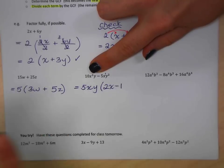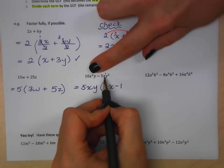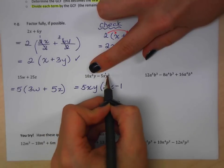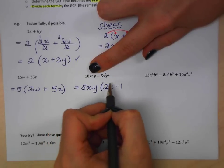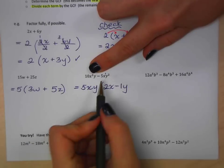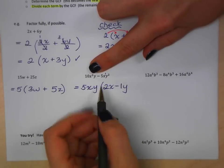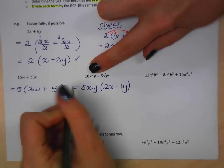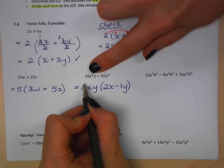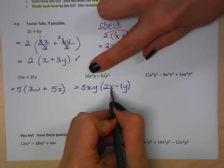So negative 5 divided by 5 is going to be negative 1. I will write in the 1 now, but you don't need to. x divided by x is, again, just 1. And then y squared divided by y is left me with a y. So it's going to be 2 minus 1 if I'm subtracting my exponents. So finally, 5xy is my greatest common factor. And I'm left with 2x minus y.